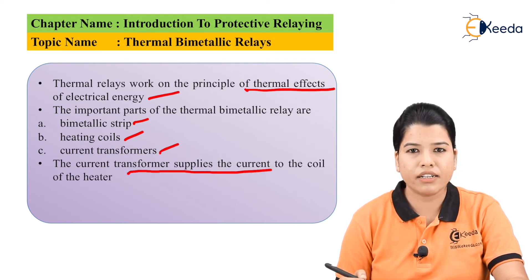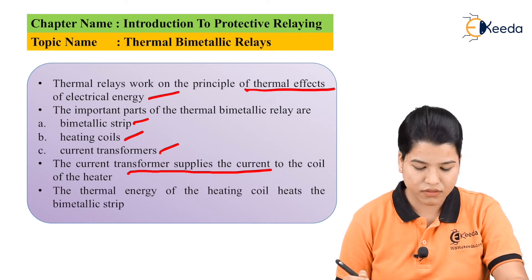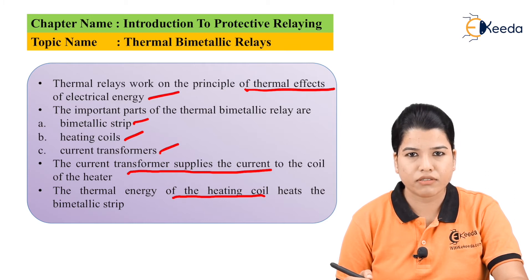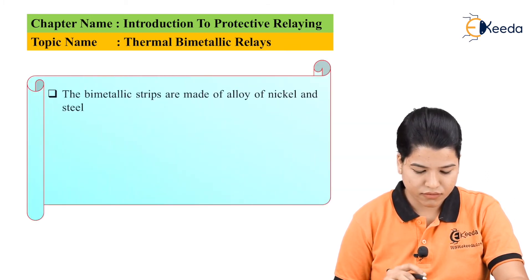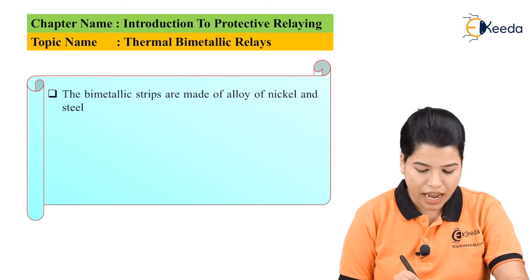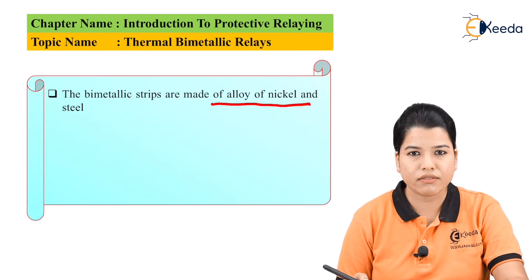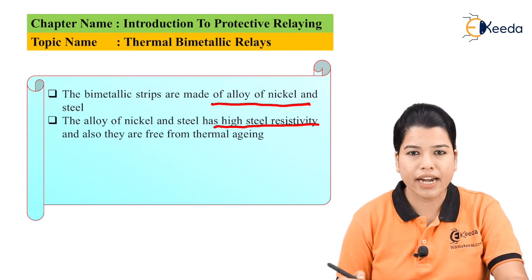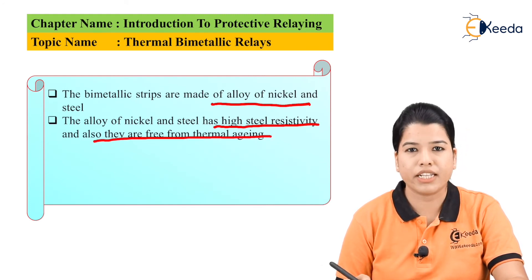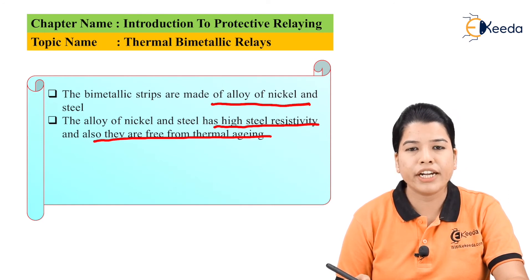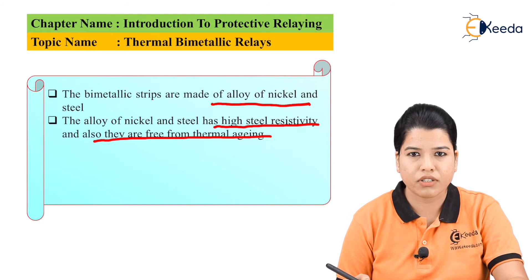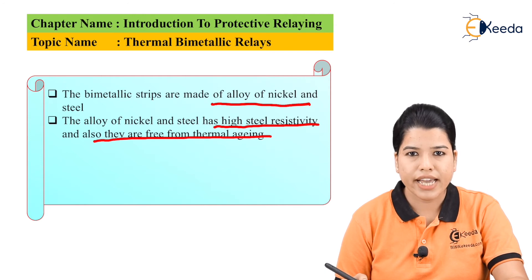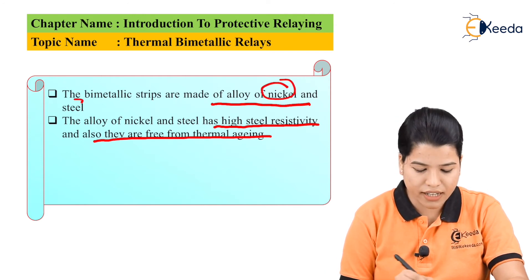The current transformer supplies current to the heater coil, and the thermal energy of the heating coil heats the bimetallic strip. The bimetallic strip is made up of an alloy of nickel and steel, which has high electrical resistivity and is free from thermal aging. The heat produced induces very high thermal stress on the bimetallic strip, so it must be made from a material that can sustain such high stresses — hence the alloy of nickel and steel.